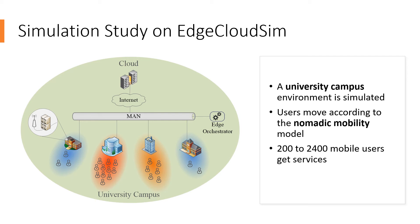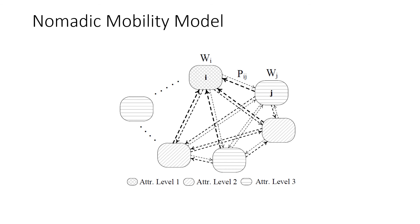Let's look at our experiment and its results. We simulated a university campus where mobile users move according to the nomadic mobility model. There are three different place types based on their attractiveness level. The red circles are the most attractive places with longer dwell time, while the blue circles are the less attractive places with very short dwell time. In the nomadic mobility model, users change their location after spending some time at their current location. The probability of selecting any place is the same, but the dwell time differs, so after some time, some places become crowded.